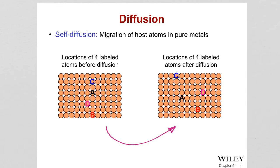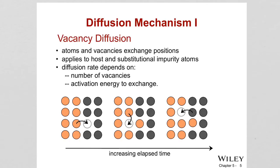The first diffusion mechanism is vacancy diffusion. This involves the interchange of an atom from its normal lattice position to an adjacent vacant site or vacancy. For vacancy diffusion to take place, there must be vacancy sites in the structure. We know the equilibrium number of vacancies in a material and how it is affected by temperature — there are always vacancies present, but when we increase the temperature, the concentration of vacancies increases.